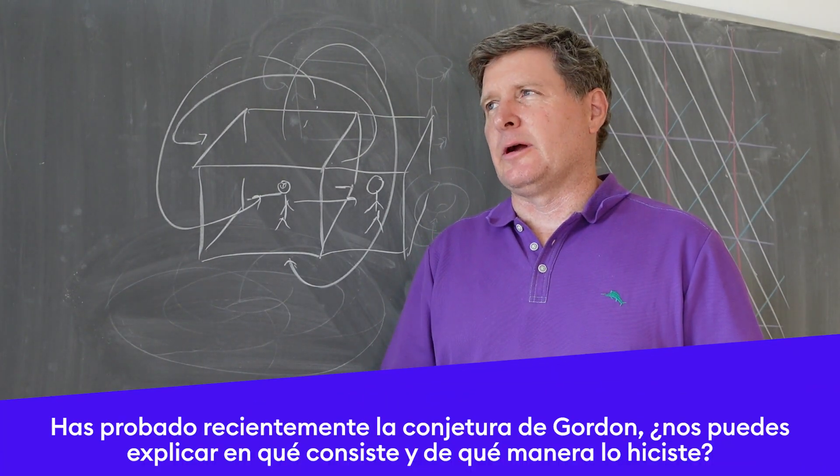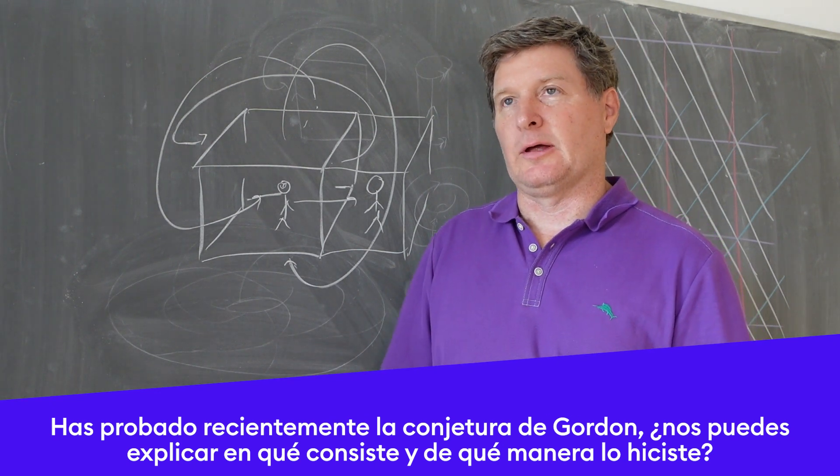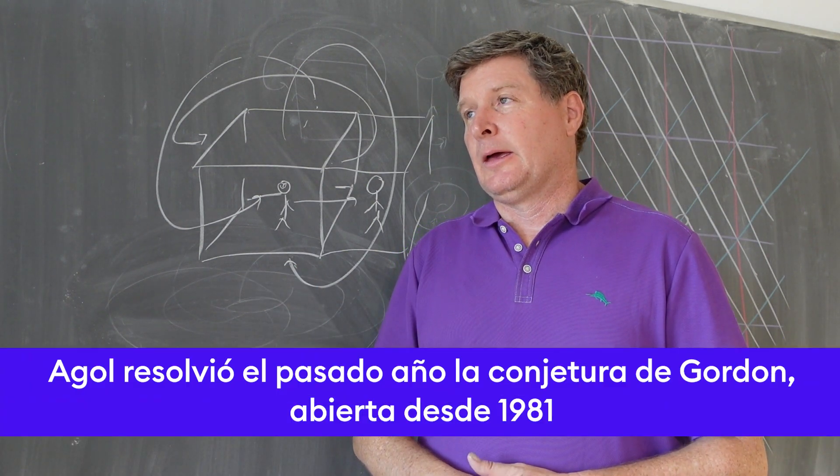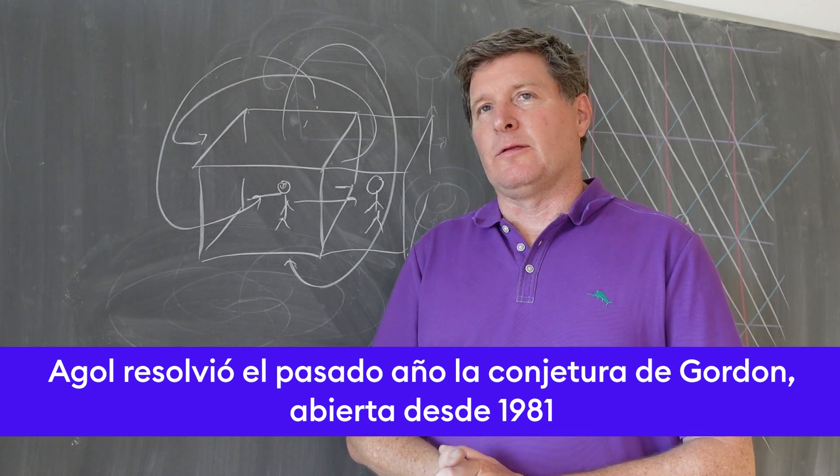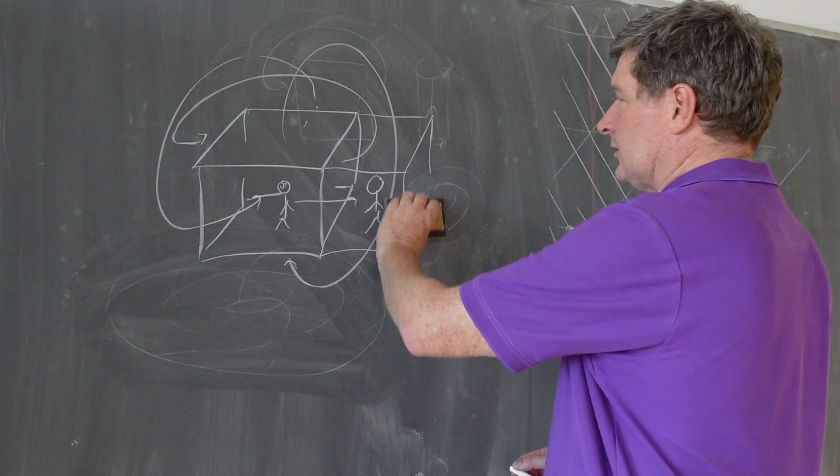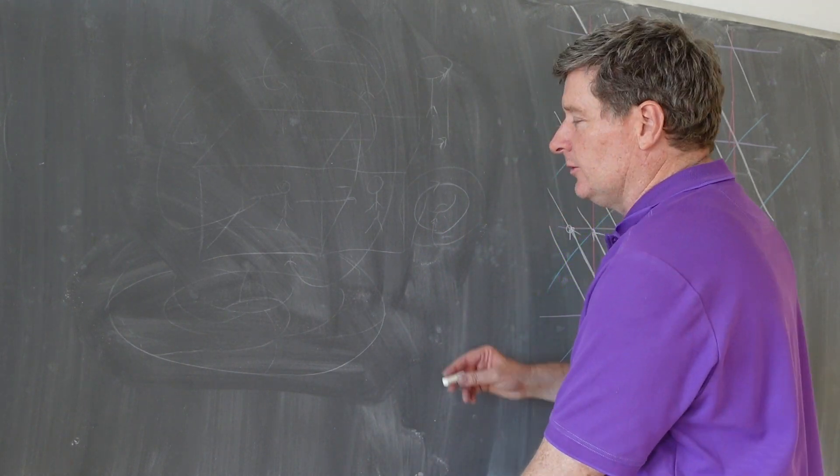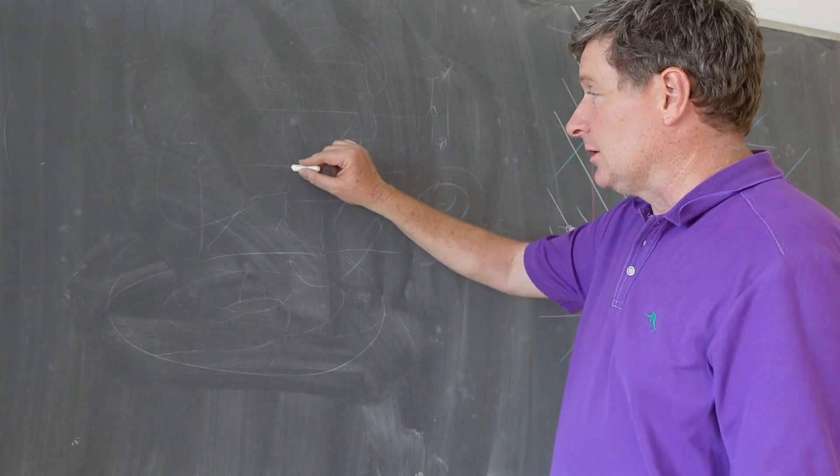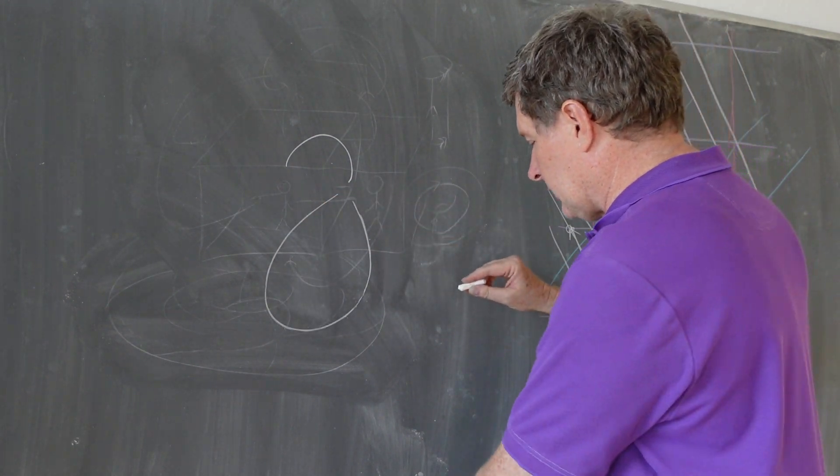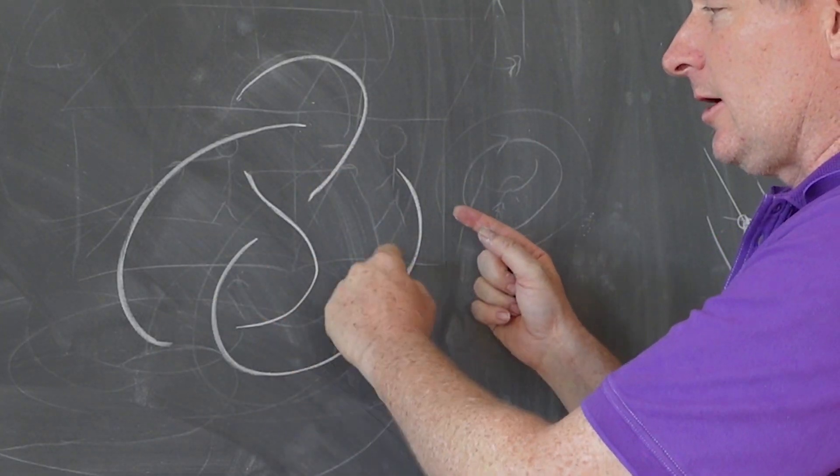I became aware of this problem a couple of years ago when Josh Green was visiting me at Berkeley on sabbatical and told me about it. I hadn't really thought about it before, but the problem is also to do with three-dimensional spaces. The question was: you have a knot, which for a topologist is a closed loop of string.